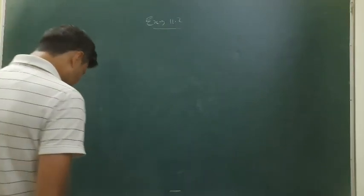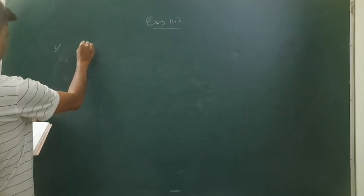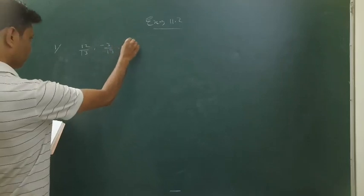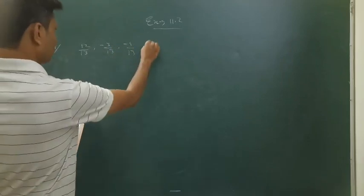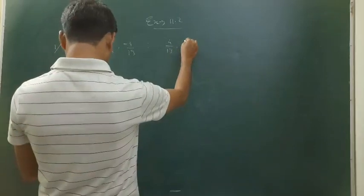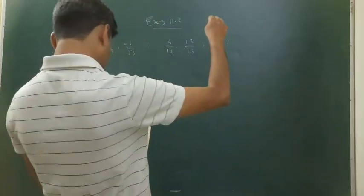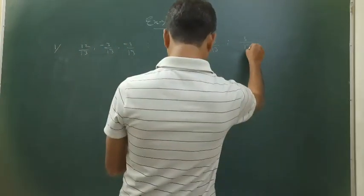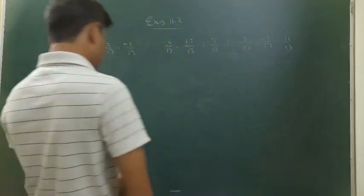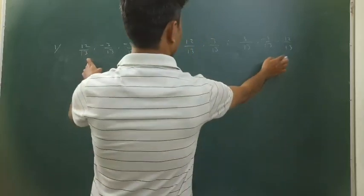Exercise 11.2, question number one: Show that the three lines with direction cosines 12/13, -3/13, -4/13; 4/13, 12/13, 3/13; and 3/13, -4/13, 12/13 are mutually perpendicular. This is the first line, this is the second line, and the third line. We need to show they are perpendicular to each other.